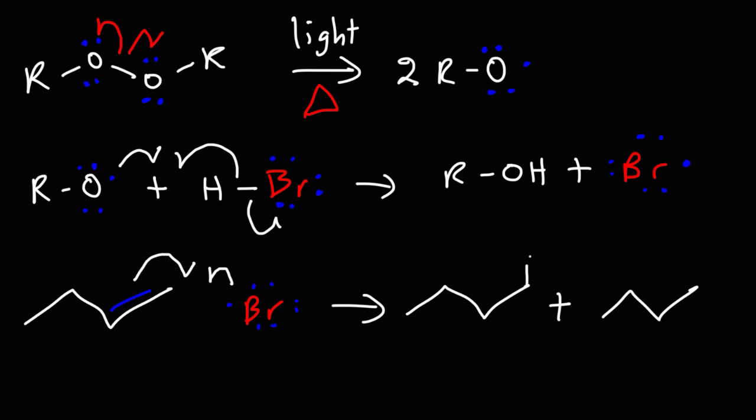If we put the bromine atom on the primary carbon, we're going to get a secondary radical. If we put the bromine atom on a secondary carbon, we are going to get a primary radical. Now, which radical is more stable? A secondary radical or a primary radical? Because secondary radicals are more stable than primary radicals, the bromine atom is going to go on the primary carbon.